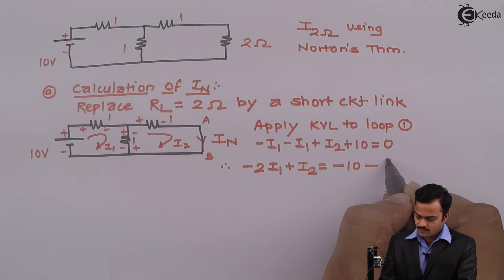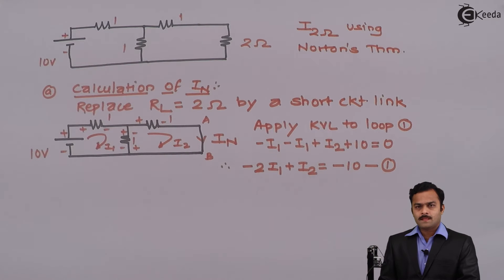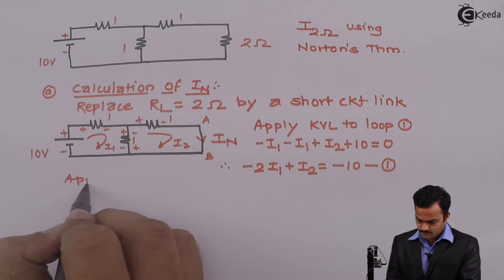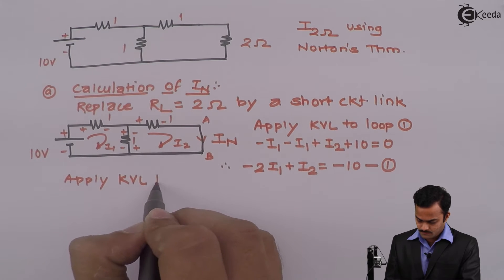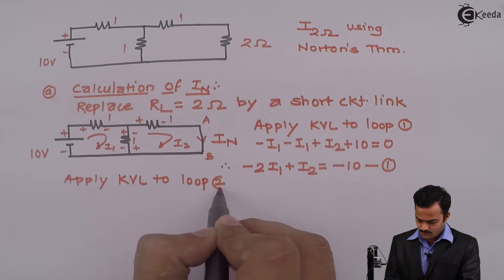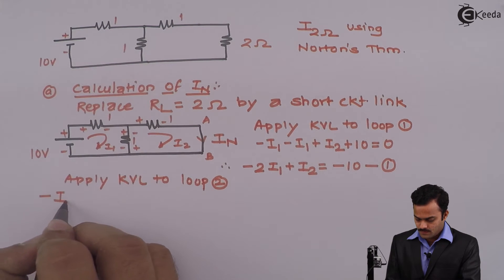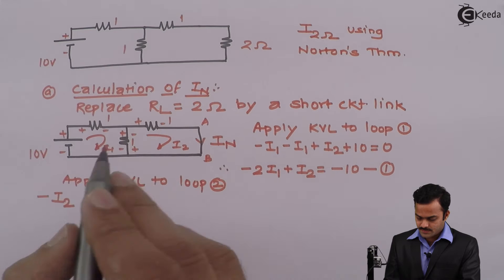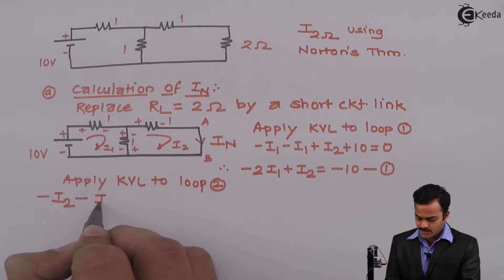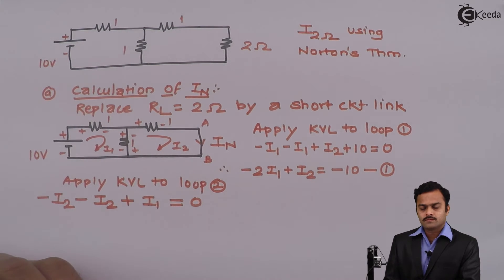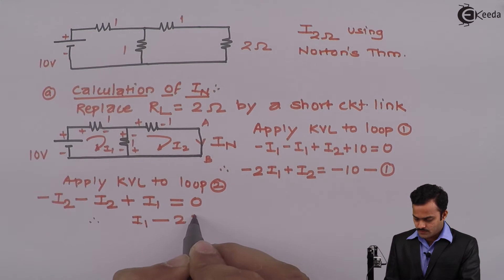Similarly I can apply KVL to loop 2. So here I will start from this point, plus minus, minus minus I2, plus minus, minus I2 term, and minus plus, plus I1 equal to 0. So if I simplify I will get I1 minus 2 I2 equal to 0.